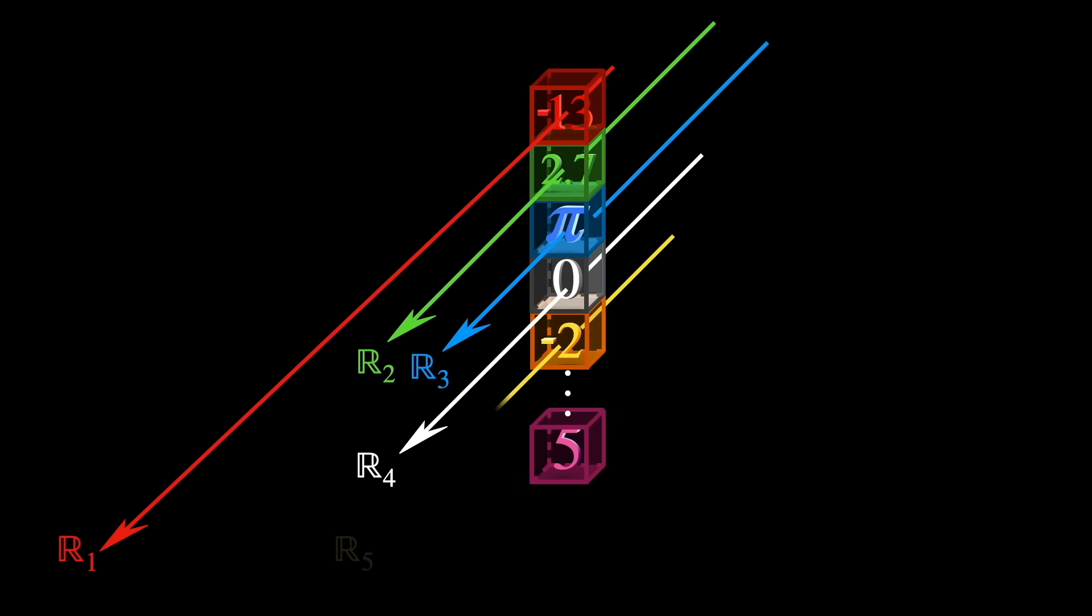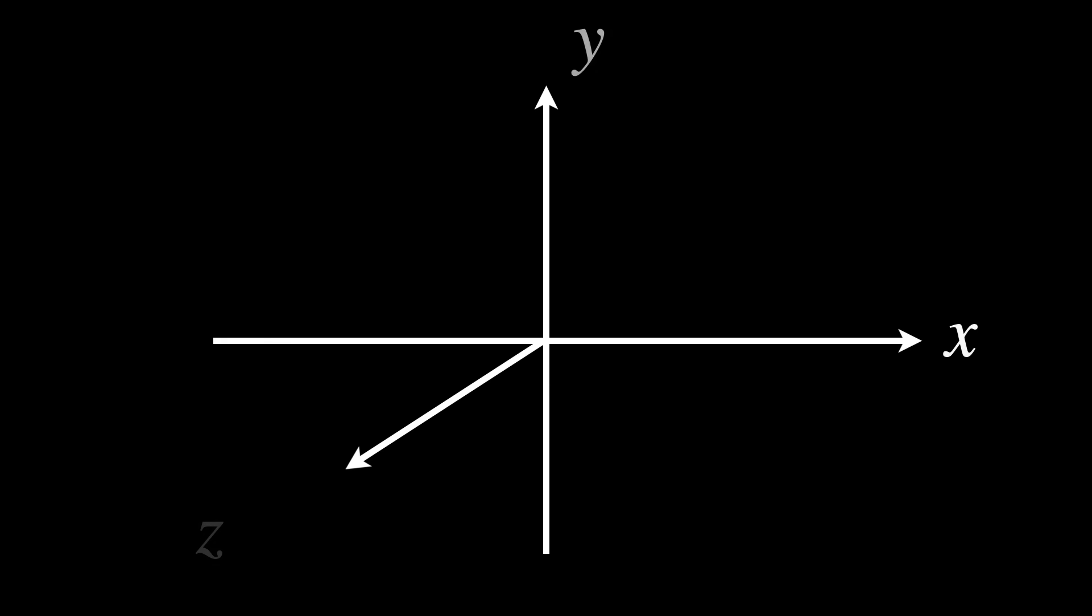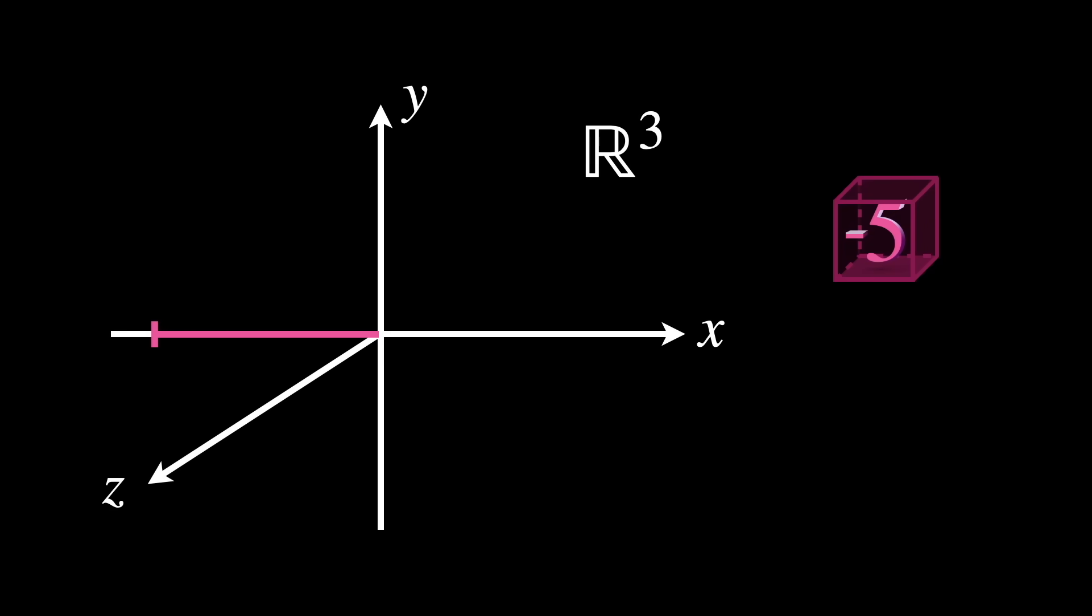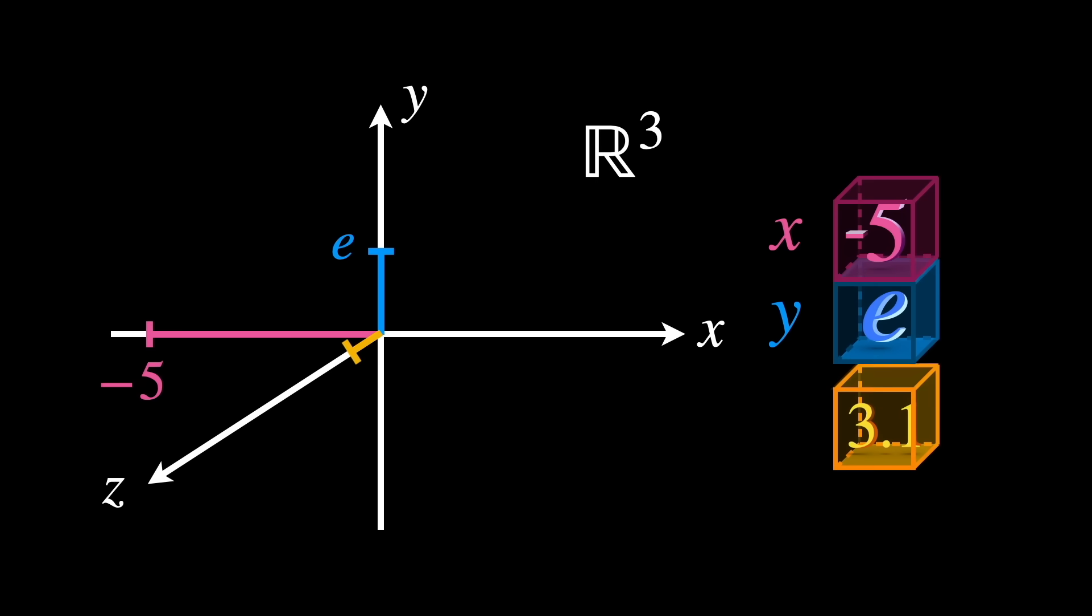Each number tells you how far to go in a certain direction. In three dimensions, for example, you'd find three numbers, and their respective real lines are usually called X, Y, Z. This is a vector, in this case, a one-dimensional array of numbers, and the number of entries depends on the dimension of the space you're in.